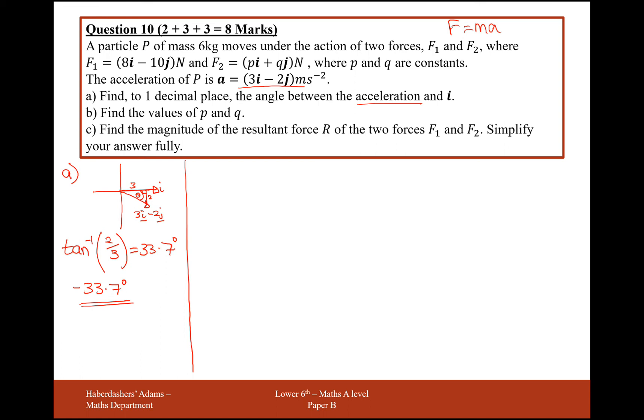Okay, find the value of P and Q. Right, okay, so let's go back to what the question is asking. We have a mass of 6 kilograms, and it moves under the action of two forces, F1 and F2, where F1 is that and F2 is that. And we want to find the value of the resultant of the two forces is the two forces added together. So we're going to need this first. If they're under the action of two forces, we need to know what they are added together.